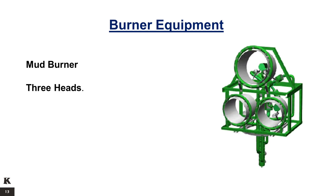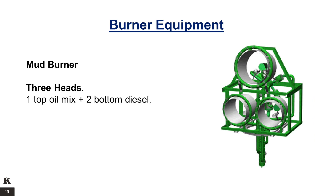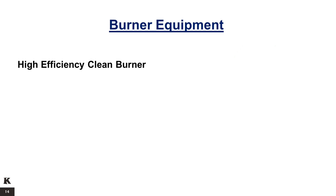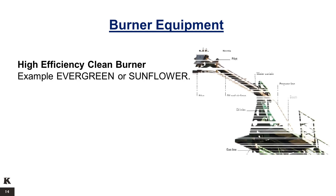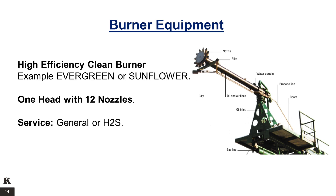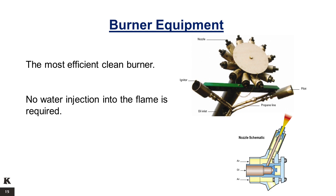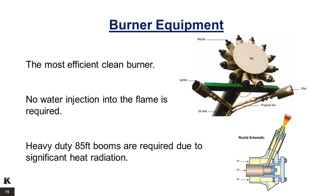Mud Burner. It is a three-headed burner where the top head is for oil mix and the two bottom heads are for diesel. It is used for general or H2S service, with a maximum capacity of 5,000 barrels per day of mud, diesel, or oil. The High-Efficiency Clean Burner — example the Evergreen or Sunflower — is a single-headed burner with 12 nozzles, used for general or H2S service, with a maximum capacity of 15,000 barrels of oil per day at 360 PSI. The Evergreen is the most efficient clean burner and does not require water injection into the flame; however, it requires heavy-duty 85-feet booms due to significant heat radiation.